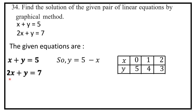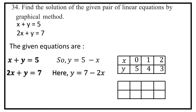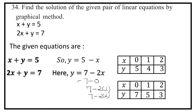The second equation is 2x plus y is equal to 7. Transposing 2x to the RHS gives y is equal to 7 minus 2x. Now let us build a table of values for the second equation. When x is 0, y is 7 minus 0, that is 7. When x is 1, y is 7 minus 2, that is 5. When x is 2, y is 7 minus 4, that is 3.